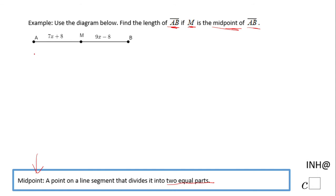So in other words, this point M divides AB into equal parts. Look at here. That's what this statement says here.